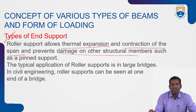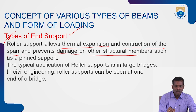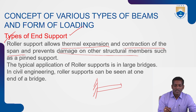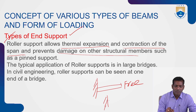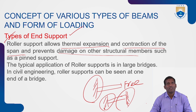The typical application of roller support is in large bridges. In civil engineering, roller supports can be seen at one end of a bridge. In a cantilever beam, one end is fixed and the other end is free with no support. In a simply supported beam, both ends are supported. The type of support depends upon the application and the type of load.